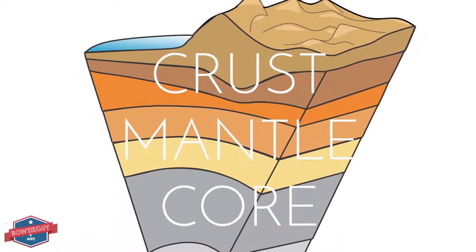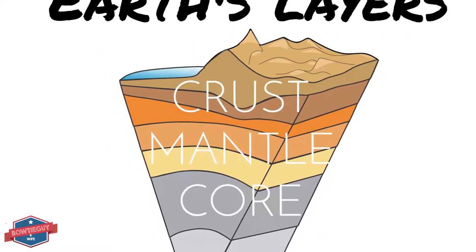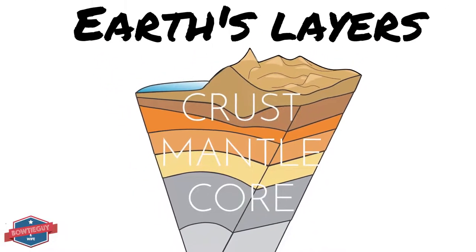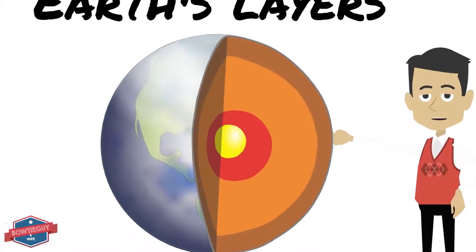What are the three layers of the earth? The three layers of the earth are the crust, mantle, and core. You can see the crust, mantle, and core in this graphic.